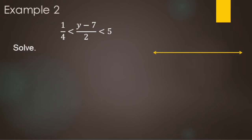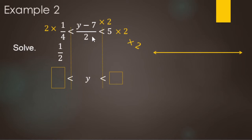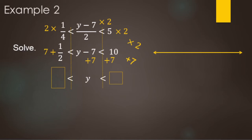For this next example, I'll show two different ways of solving. In the first way, we solve straight down and want y by itself. We need to undo a divide by 2 and a minus 7. We start by undoing the divide by 2 with a times 2 to all three sides. 2 times 1/4 is 2/4, which makes 1/2. Times 2 divided by 2 on the middle makes 1 times (y minus 7), which is just y minus 7. 5 times 2 makes 10. Next, undo the minus 7 with a plus 7 to all three sides: 7 plus 1/2 makes 7 and a half; y minus 7 plus 7 is just y; and 10 plus 7 makes 17.